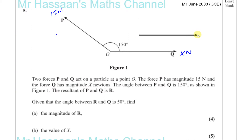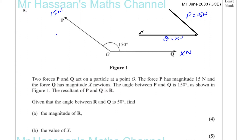And then you've got 15 Newtons in this direction. The angle between R and Q is 50 degrees. So this is your force Q and this is your force P — equal to X Newtons and 15 Newtons respectively. The resultant force I'll draw as a dotted line. You draw the vector for one of the forces; where it ends, you start the vector for the other force; where that ends, you join the beginning to the end — and that's the resultant force.